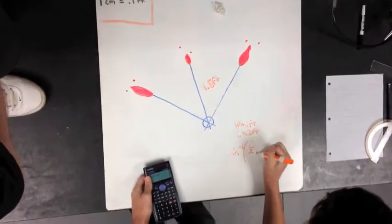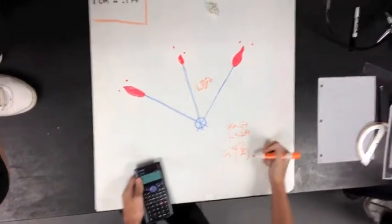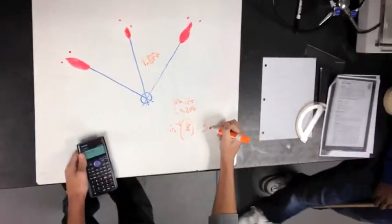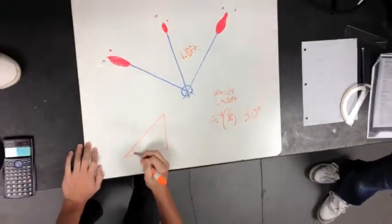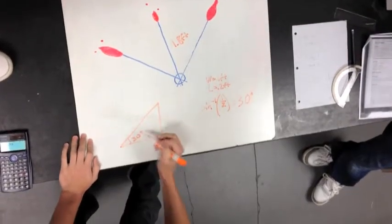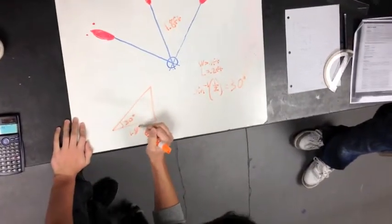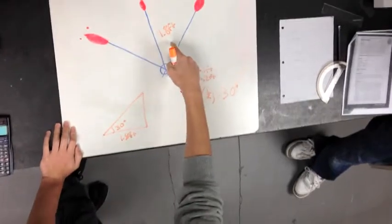So then you draw a triangle over here, a right triangle with this is 30 degrees, and then this is 1.8 feet, which is the length from here.